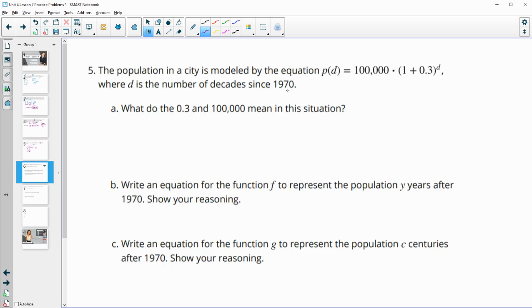Number five: the population of a city is modeled by this equation where d is the number of decades since 1970. What do 0.3 and 100,000 mean in the situation? The 0.3 is the growth rate, not the growth factor, but the growth rate, meaning this population is growing 30% each decade. And 100,000 is your initial population.